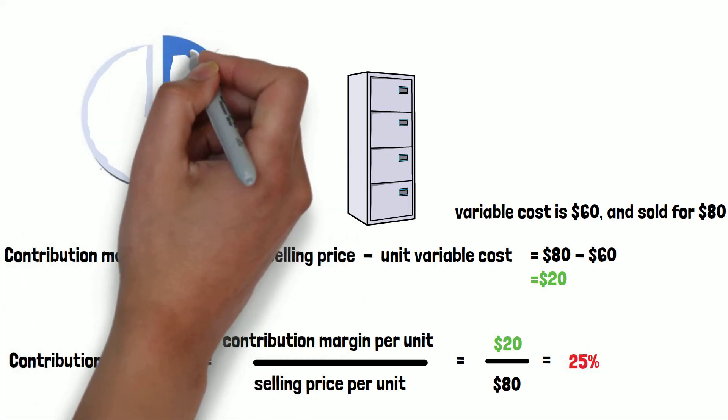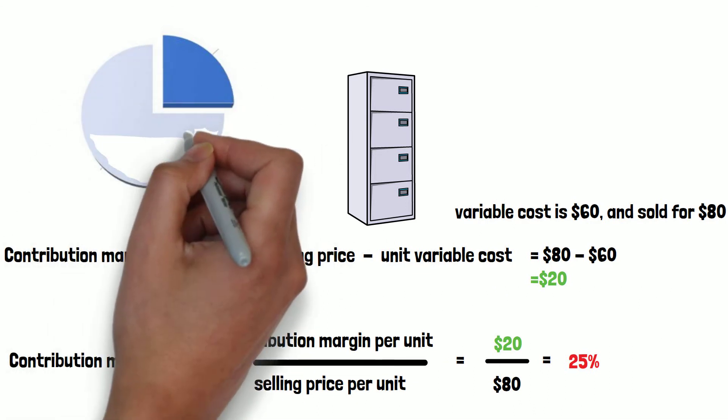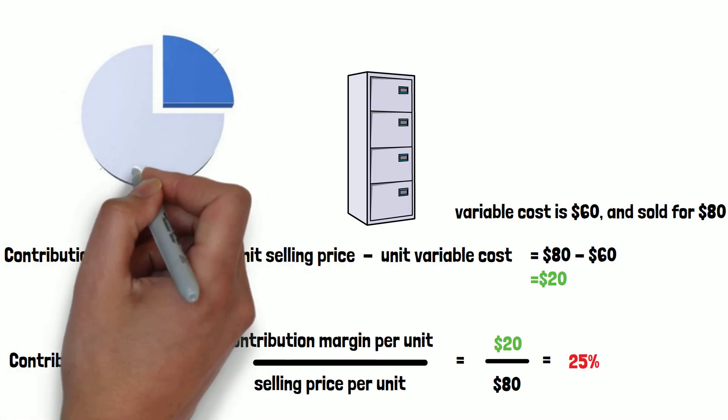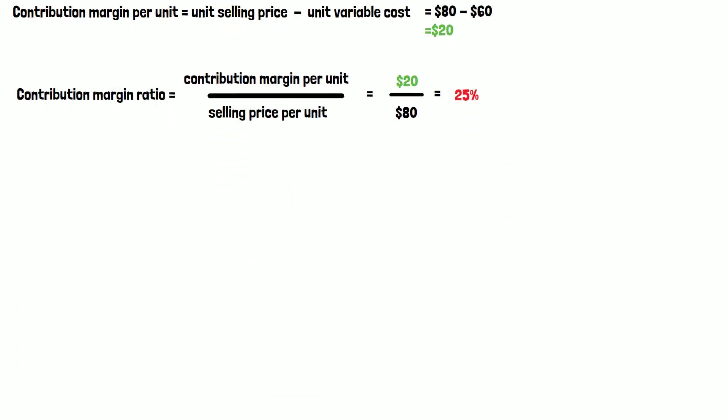Okay, so that's the pie chart. The blue area, that's the contribution margin for the product.